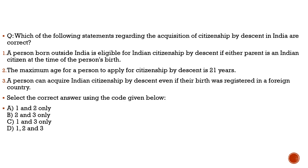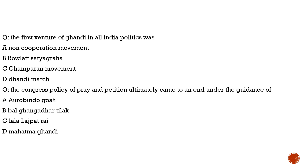Now for the previous year questions. First: the first venture of Gandhi in all-India politics was the Rowlatt Satyagraha — the correct answer is option C. The second previous year question: the Congress policy of pray and petition ultimately came to an end under the guidance of Bal Gangadhar Tilak — the correct answer is option B. With this, we complete today's discussion.